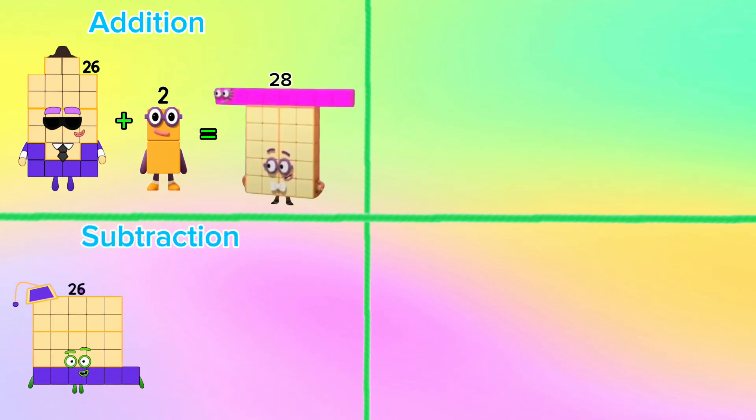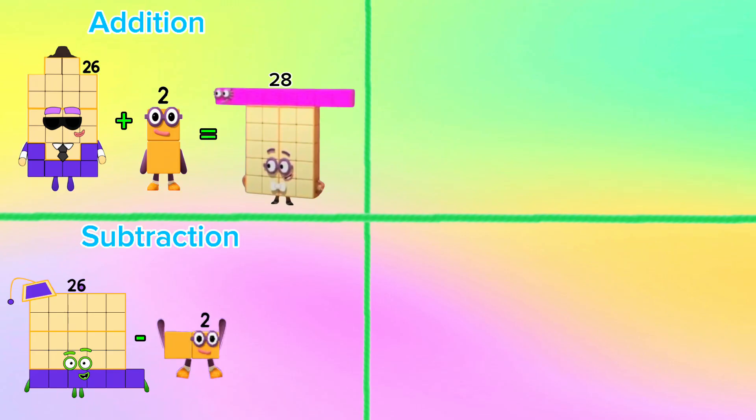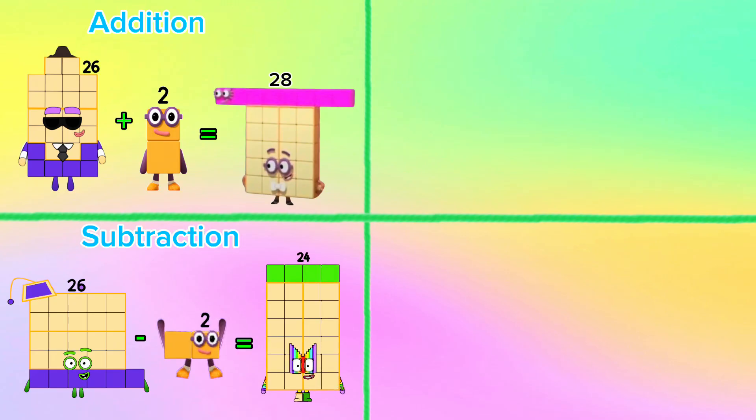Let's start with addition. 26 plus 2 is equals to 28. In subtraction, 26 minus 2 is equals to 24.